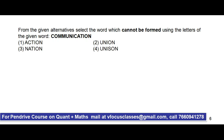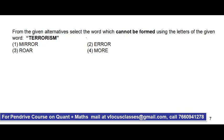Next question: from the given alternatives, select the word which CANNOT be formed. The word given is COMMUNICATION. ACTION — A, C, T, I, O, N — all are available in COMMUNICATION, so it can be formed. UNION — U, N, I, O, N — can also be formed. NATION — N, A, T, I, O, N — can also be formed. The last option contains S, which is not in COMMUNICATION, so that word cannot be formed. That is our answer.